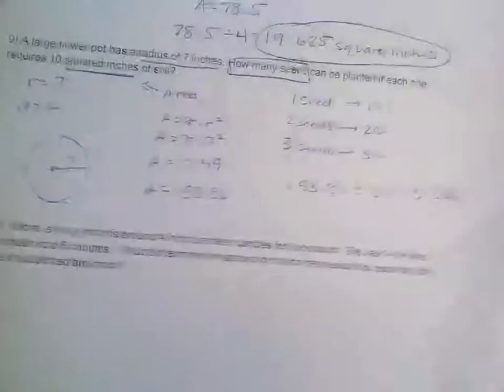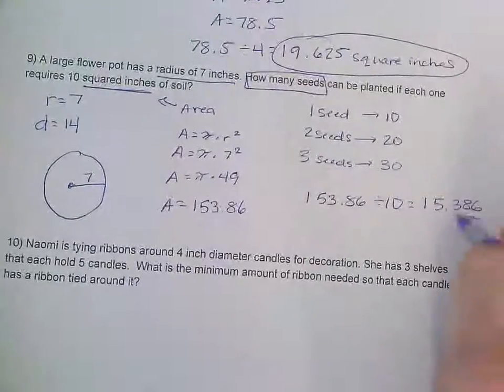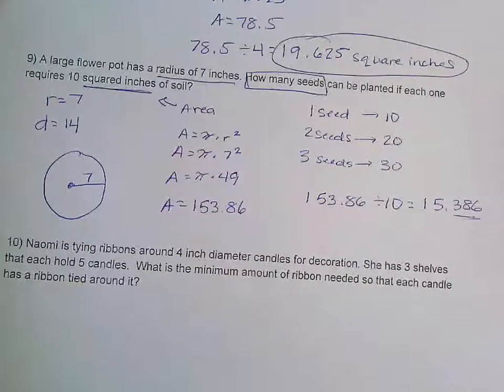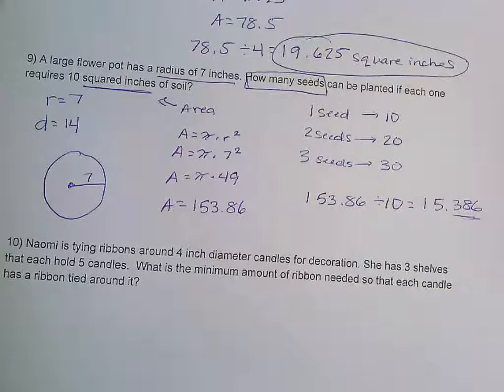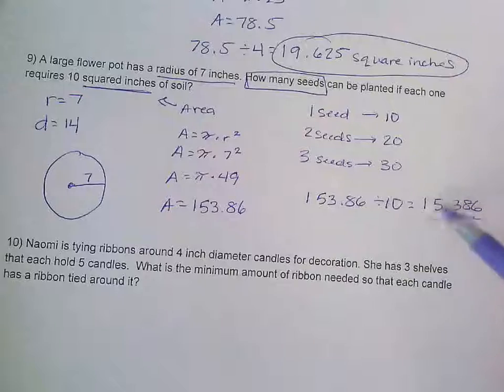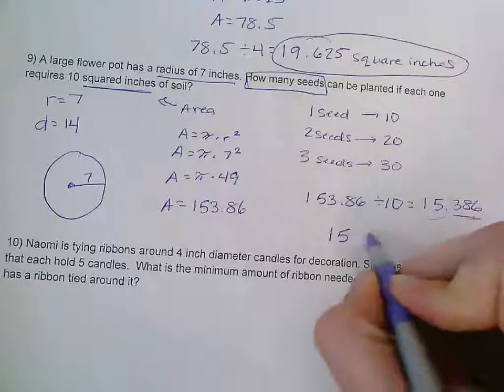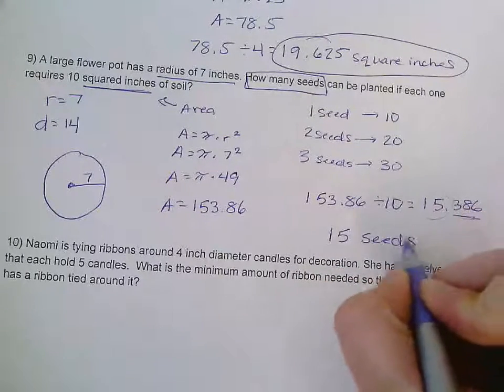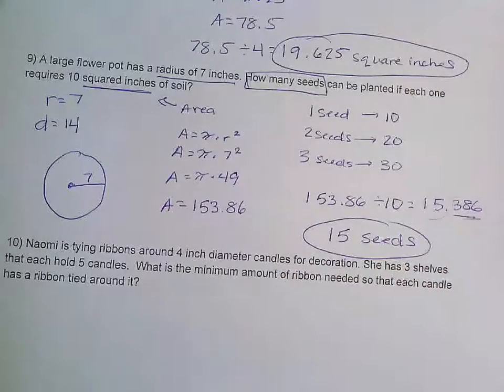So we're close. The only thing is here, it doesn't make sense to have 0.386 of a seed. If I round up to 16 at this point, those seeds are going to be too close together, and they're not going to grow. So in this case, I need to round down to 15, and I would have 15 seeds that could be planted in that large flower pot.